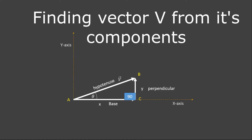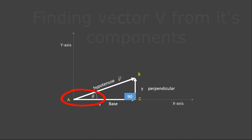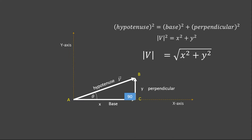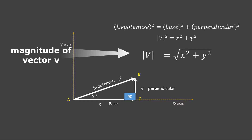To determine vector V from its components, we need two things: the magnitude of vector V and the angle theta it makes with the x-axis. For the magnitude, we use the Pythagorean theorem: hypotenuse squared equals base squared plus perpendicular squared. Solving this, the magnitude of vector V equals the square root of x squared plus y squared.